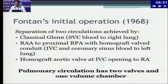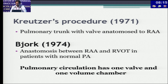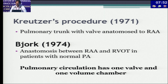Fontan's initial operation, done in 1968 and reported in 1971, had a classical Glenn. The right atrial appendage was connected to the RPA with a homograft with a valve, and a homograft aortic valve was placed at the IVC opening to the RA. It was thought that the RV is dispensable, but you need one volume chamber and two valves. The Kreutzer procedure, published in 1973, described translocating the pulmonary trunk to the right atrial appendage. Bjork then published an anastomosis between the right atrium and the RVOT using pericardium as a roof — this circulation had one valve and one chamber.